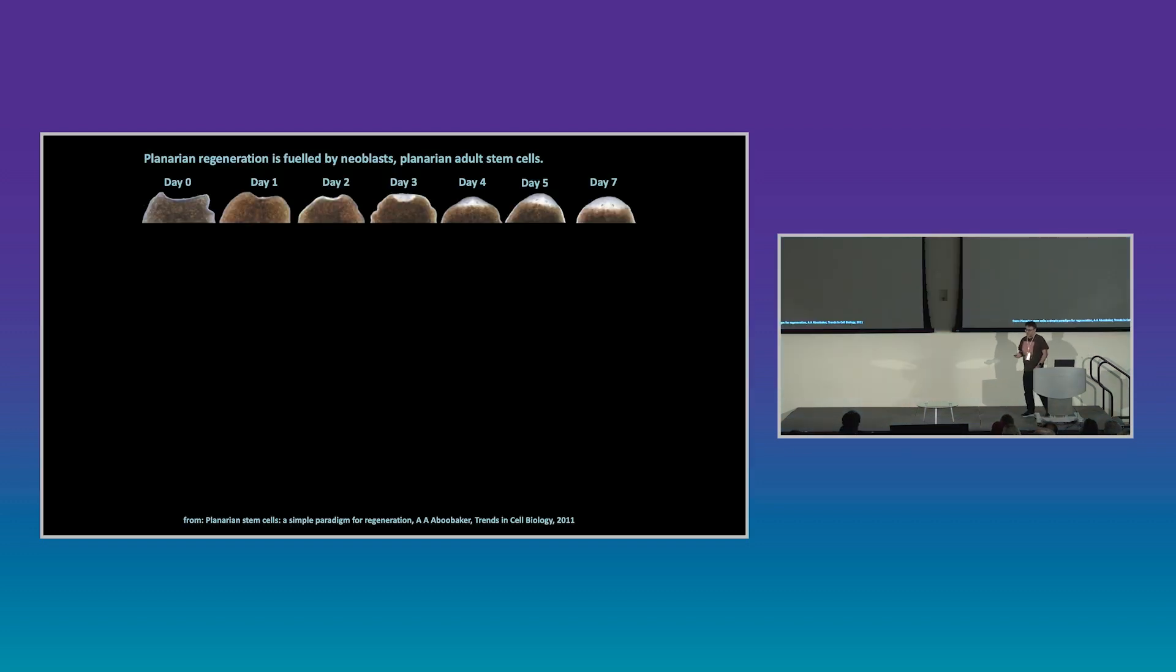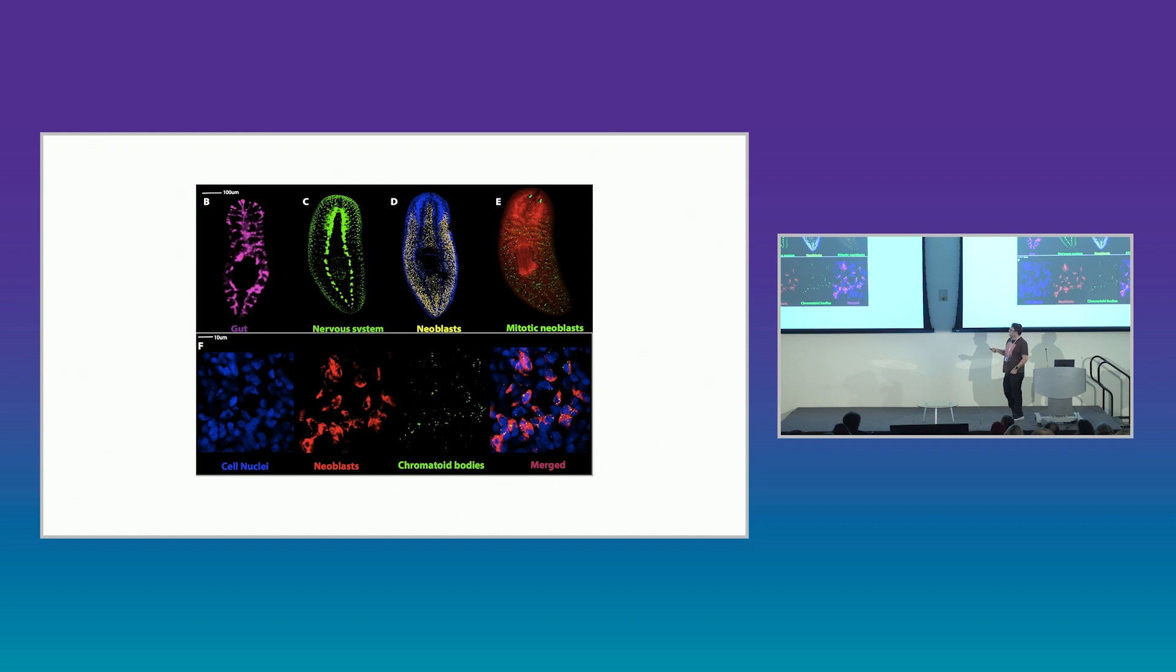So the way we do experiments is to decapitate the animals. We get a wound healing process that makes the wound area as small as possible. And over the subsequent days, you form this unpigmented tissue, which is the regenerative blastema. And this is made up of cells that have left the cell cycle, are post-mitotic, until about three or four days. There's no cell division in this area. And so their stem cell progeny have migrated to form this blastema. And they will differentiate in an organized manner, in this case to remake the whole brain and anterior central nervous system.